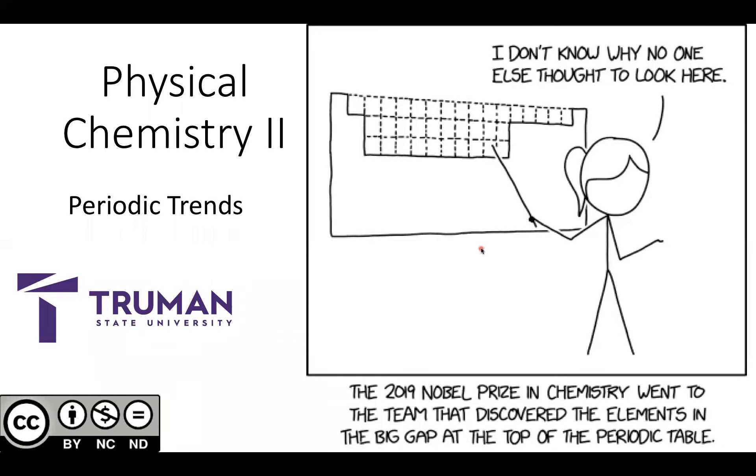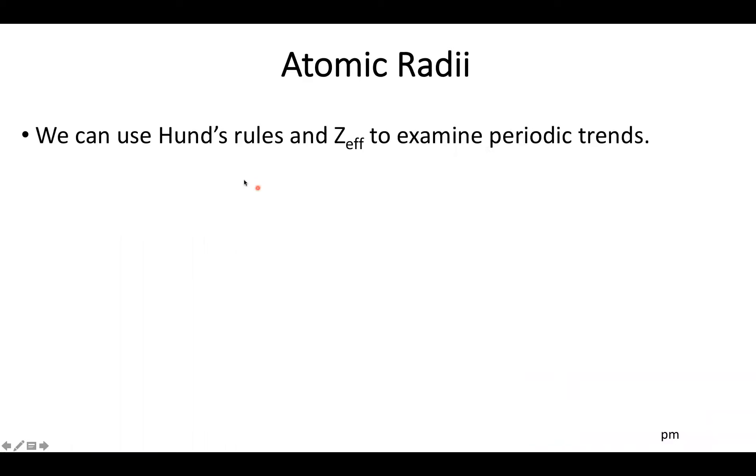We're going to start off with making a lot of use of Hund's rules about how electrons fill up as we go to increasingly high numbers of electrons present, as well as paying close attention to how each of these electrons feels the pull of the nuclei, because this is really going to help dictate the energy of each of these various electrons, especially in the various orbitals. We're going to use this to examine a lot of our periodic trends, starting with atomic radii.